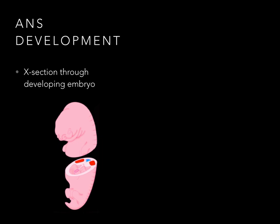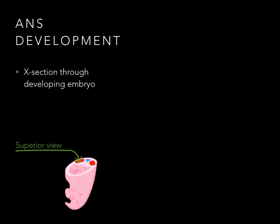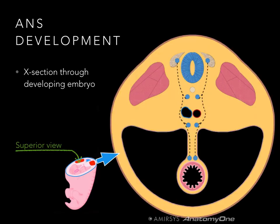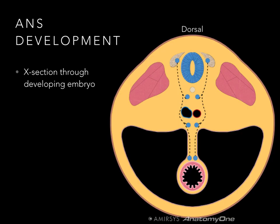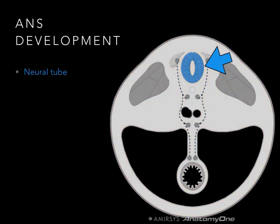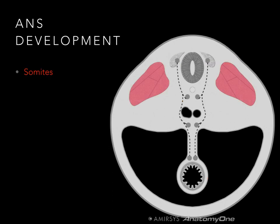Let's discuss how the autonomic nervous system develops in an embryo and how that helps us understand the two-neuron pathways. There's a cross-section through a developing embryo showing the neural tube in blue, a somite from the periaxial mesoderm, and the gut tube. Looking at it from a superior view, we can see the dorsal and ventral aspects and the left and right surfaces. There's the neural tube, which becomes the CNS, neural crest cells, somites, and the notochord.